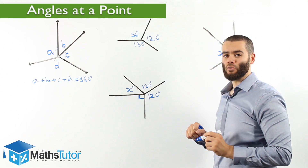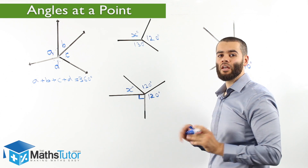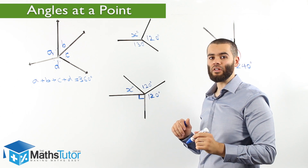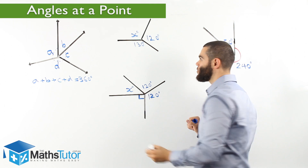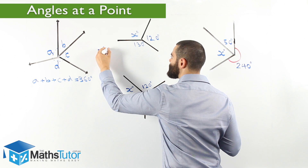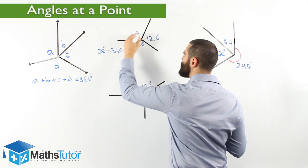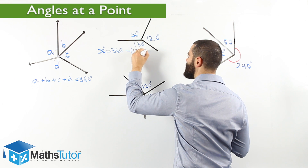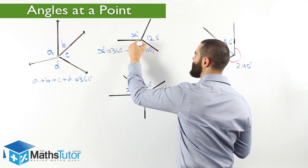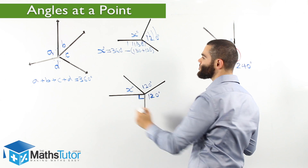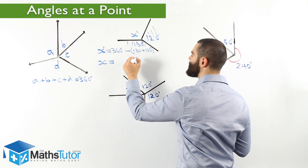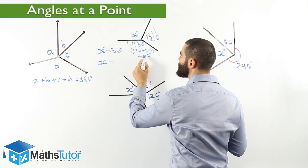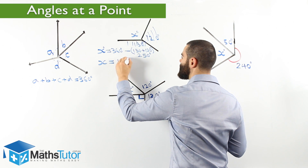Here we have three angles: an angle marked with an X, an angle marked with 120, and an angle marked with 130. All together meeting at a point, hence they make angles at a point. Let's see how we're going to work out X using this rule. X equals 360 degrees, which is the total, minus 130 and minus 120. So we're going to take away the 130 and take away 120. X is going to be 360 take away 130 and 120, which is 250 degrees. So 360 take away 250 — X is going to be 110 degrees.